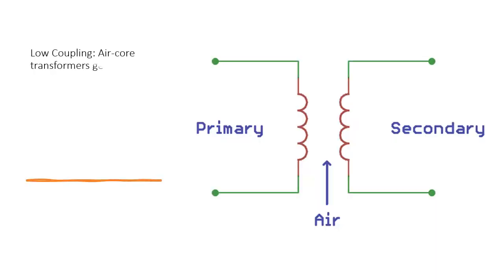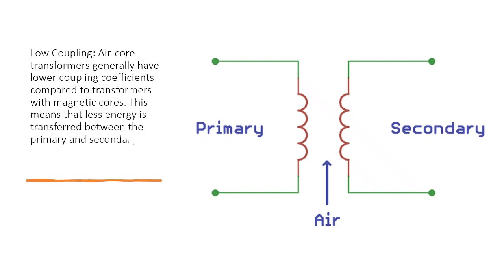Low coupling, air core transformers generally have lower coupling coefficients compared to transformers with magnetic cores. This means that less energy is transferred between the primary and secondary coils, making them less efficient for power transfer.